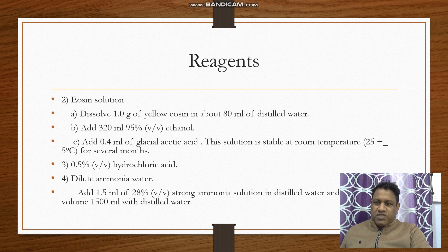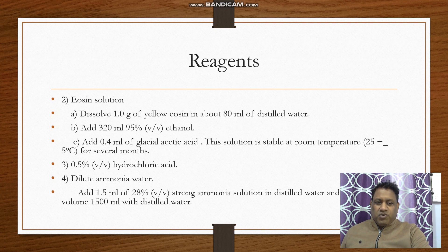Eosin reagent: Dissolve 1 gram of yellow eosin in about 80 ml of distilled water. Add 320 ml of 95% ethanol and 0.4 ml of glacial acetic acid. This solution is stable at room temperature (25°C ± 5°C) for several months. The third reagent is 0.5% hydrochloric acid. For dilute ammonia water, add 1.5 ml of 28% strong ammonia solution to distilled water and make the final volume 1500 ml with distilled water.